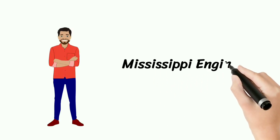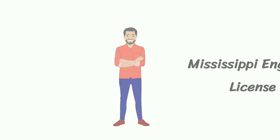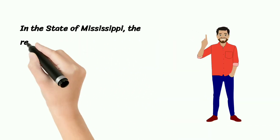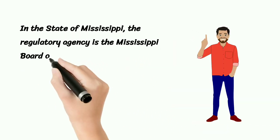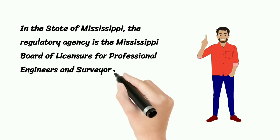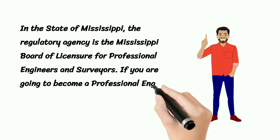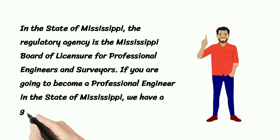Mississippi Engineer License. In the state of Mississippi, the regulatory agency is the Mississippi Board of Licensure for Professional Engineers and Surveyors. If you are going to become a professional engineer in the state of Mississippi, we have a guide for you.